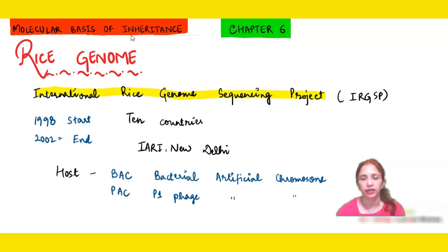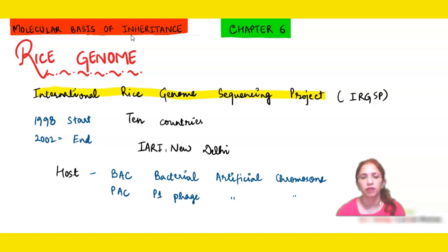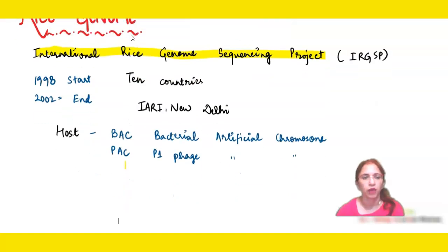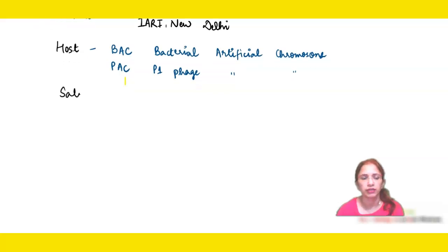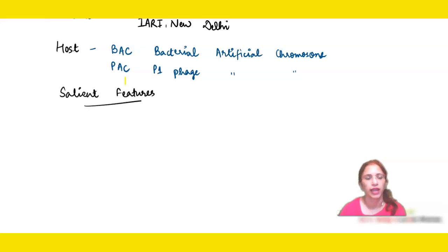IARI stands for Indian Agricultural Research Institute and was involved in the Rice Genome Sequencing Project. The hosts used were BAC — Bacterial Artificial Chromosome — and PAC — P1 Phage Artificial Chromosome. Just as we studied the salient features of the human genome project, we will now study the salient features of the rice genome project.